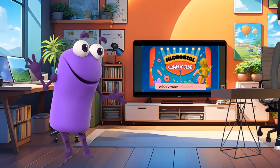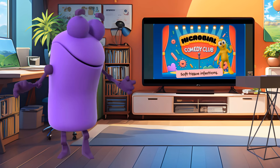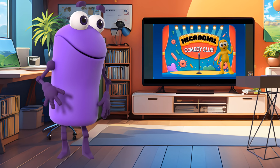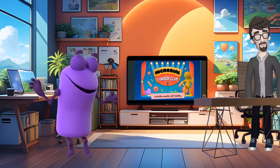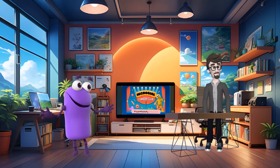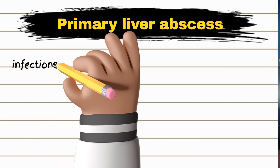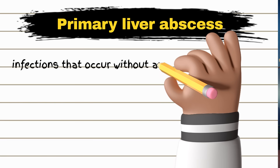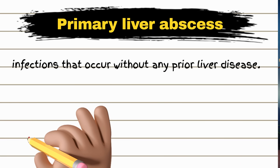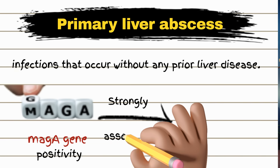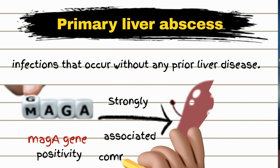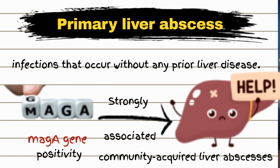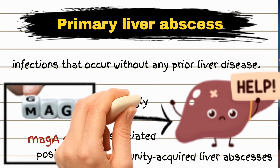What about primary liver abscess? I heard something about MAG-A being involved. Right you are, Sella. Primary liver abscess refers to infections that occur without any prior liver disease. MAG-A positivity is strongly associated with these community-acquired liver abscesses and is less common in other types of Klebsiella infections, making MAG-A a significant marker for these severe infections.